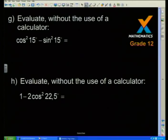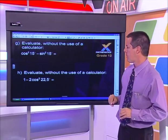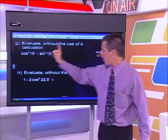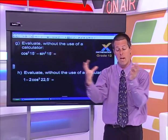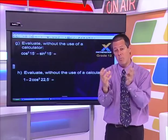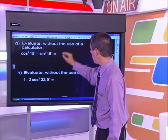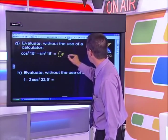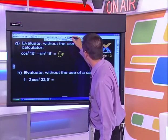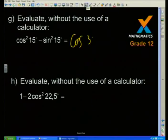Here are more examples — evaluate without a calculator. cos²(15) − sin²(15): I can contract it to cos(2 × 15) = cos(30) = √3/2. I keep coming to that nice special angle.